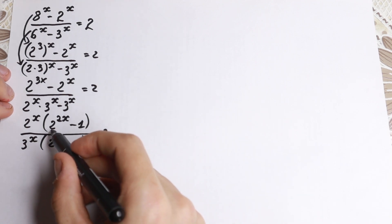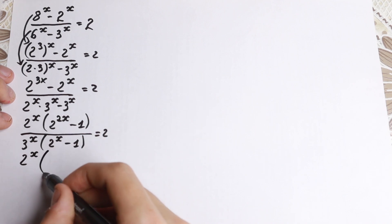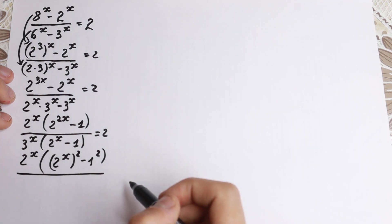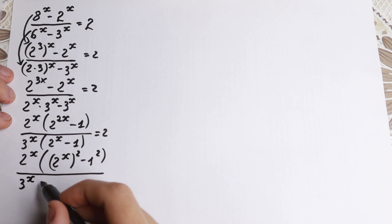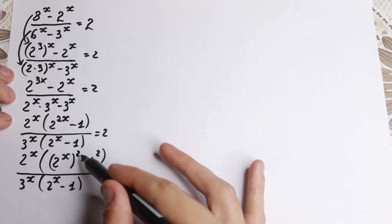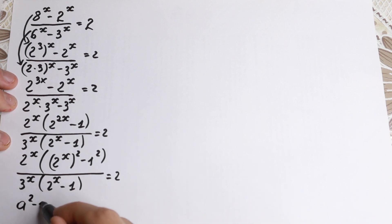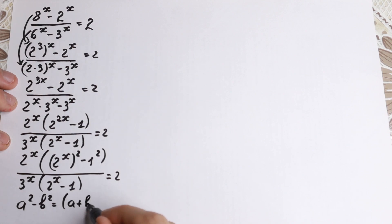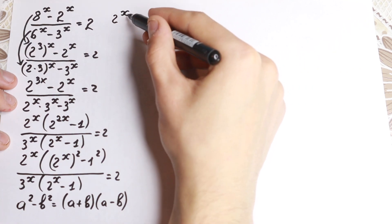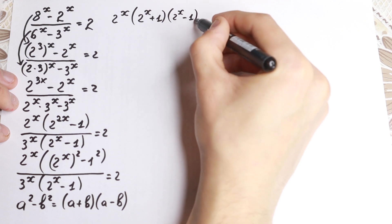Right now, there's a really interesting expression in the numerator. We have 2 to the power 2x, which we can write as 2 to the power x squared. Moreover, 1 can be written as 1 squared. So we have a difference of two squares: 2 to the x squared minus 1 squared. Applying the identity a squared minus b squared equals a plus b times a minus b, our numerator becomes 2 to the x plus 1 times 2 to the x minus 1, all over 3 to the x times 2 to the x minus 1.